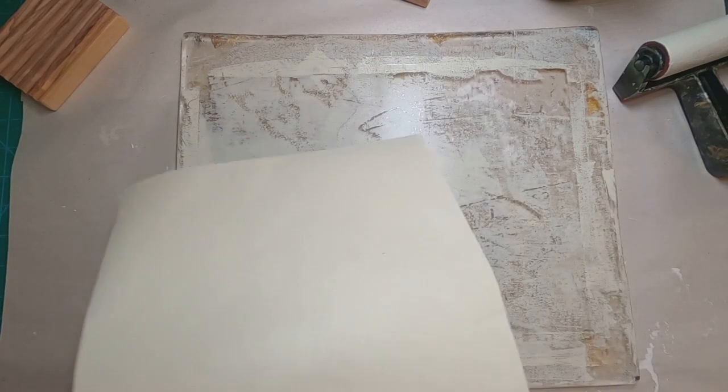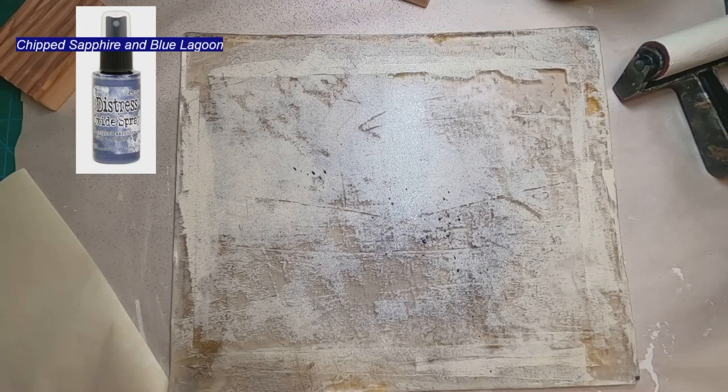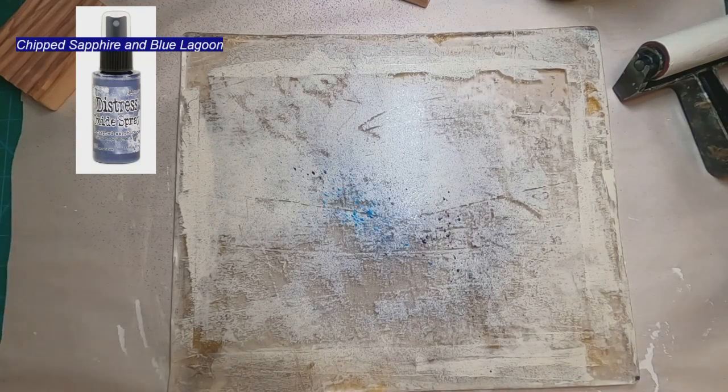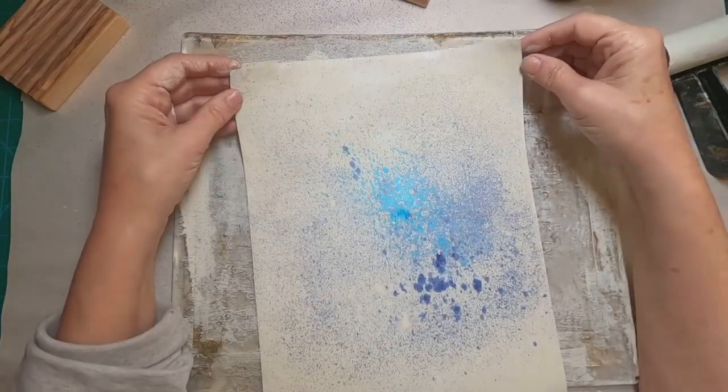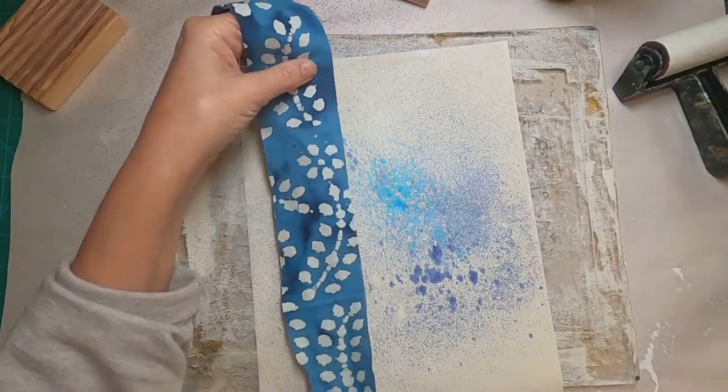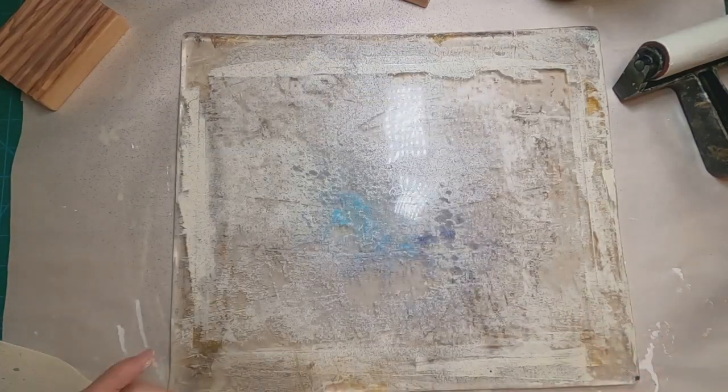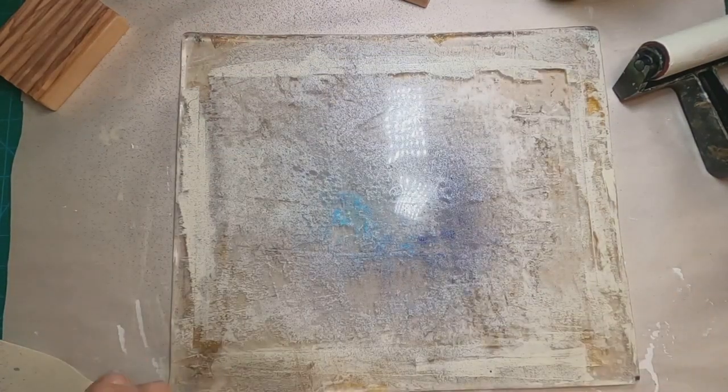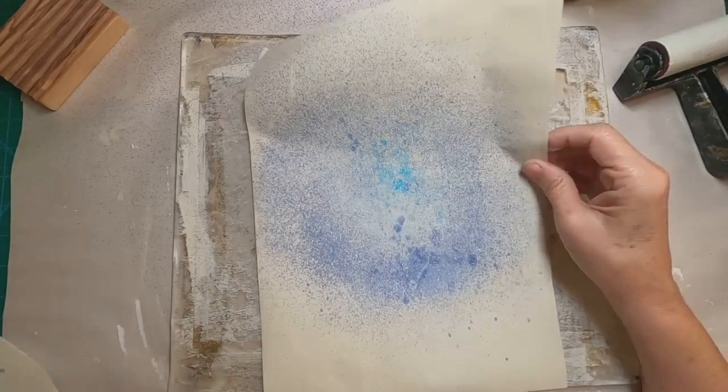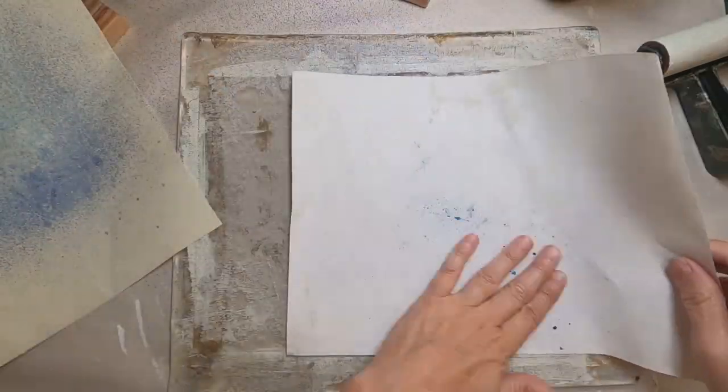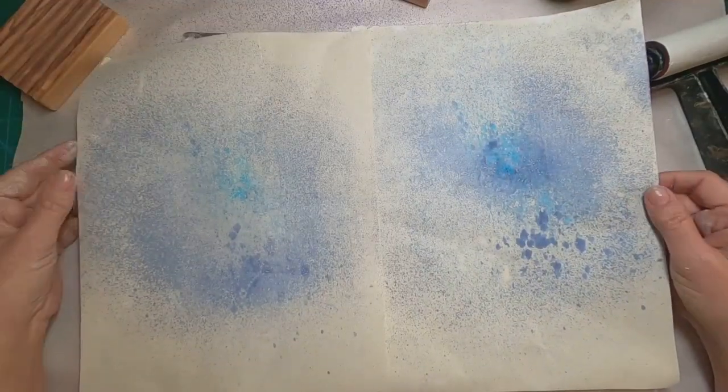Now to jazz it up a little bit, I'm going to pull some distress oxide inks and just do a light spray over that gel press in two colors, chipped sapphire and blue lagoon. That is going to be the front cover and back cover background. I'll just coat up a couple more sheets and we will be off to the races in decorating this book.